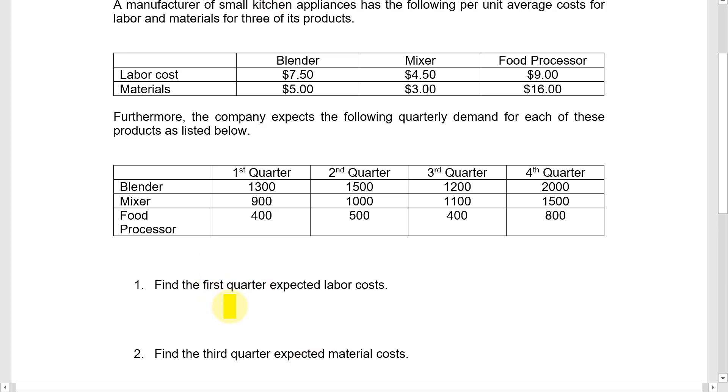So to find the first quarter expected labor costs, if I look here at labor costs, maybe you can see that if I take this row and take each of those values in that row and then multiply by each of the values in this column, since they represent demand levels for each product in the first quarter, multiplying the $7.50 times the $1,300 gives me labor costs for blenders, multiplying that $4.50 times $900, that gives me labor costs for the mixer.